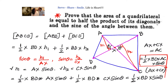Let us have a recap of what we have done. We were asked to prove that the area of quadrilateral ABCD equals half into AC into BD into sin theta, where theta is the angle between the diagonals. To prove this, we divided the quadrilateral into two triangles taking diagonal BD as the base. So, area of quadrilateral equals area of ABD plus area of BCD, and the area of each triangle is half into base into height.